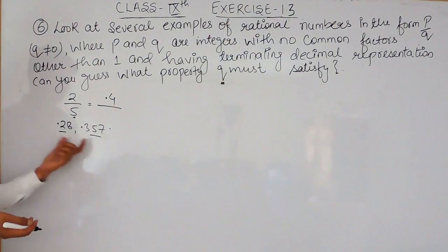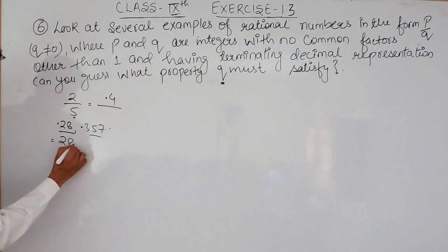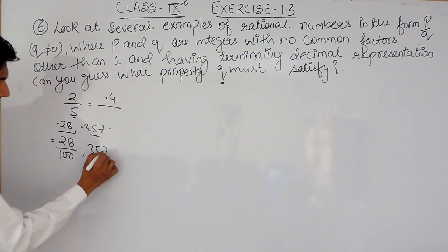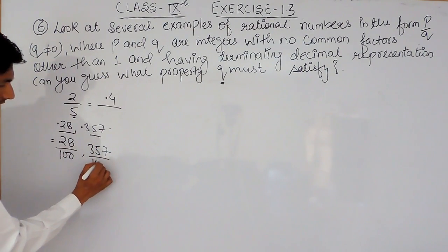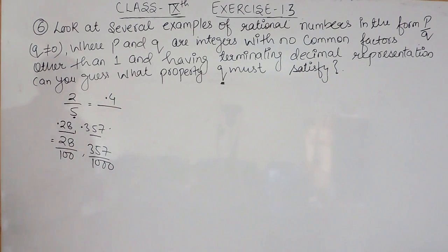Terminating means if I write this as 28 upon 100 and this can be written as 357 upon 1000. So one thing is very clear, that whenever we have to terminate a decimal expansion, there should be 0 in the denominator, otherwise it cannot terminate.